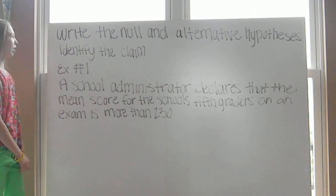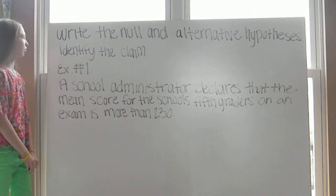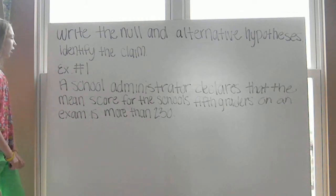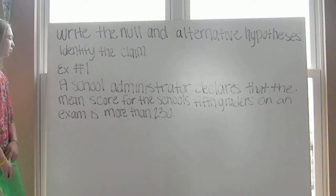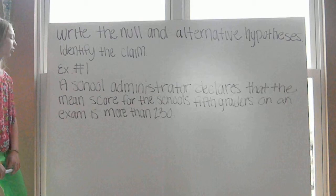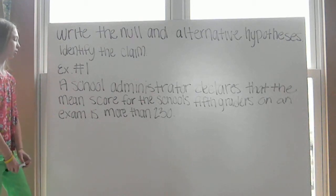Example number one. Write the null and alternative hypothesis and identify the claim. A school administrator declares that the mean score for the school's fifth graders on an exam is more than 230.